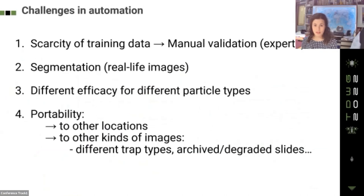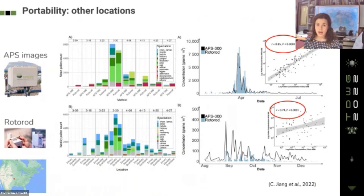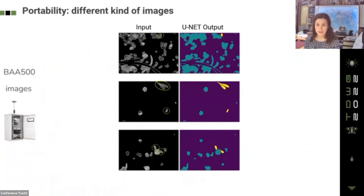Are algorithms portable? Can they be used in other locations or with images in different conditions? For example, devices tested in Munich against reference European traps have been trained with American specimens collected with devices not used in Europe — algorithms may need to be fine-tuned and localized. We developed an algorithm to detect the highly allergenic Alternaria spores from images of the BIA500. Training images were pre-processed, and we got quite good segmentation and recognition results. However, when applying this algorithm to manual microscopic images, it didn't work well.